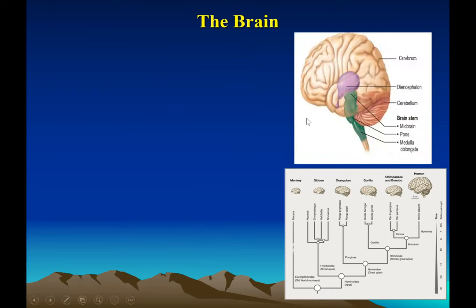Your brain controls your entire body — your personality, mood, emotions, homeostasis, everything. It is the control center of your body. This slide shows a comparison of the primate brain to the human brain. As you go higher up the brain, function becomes more and more complex.